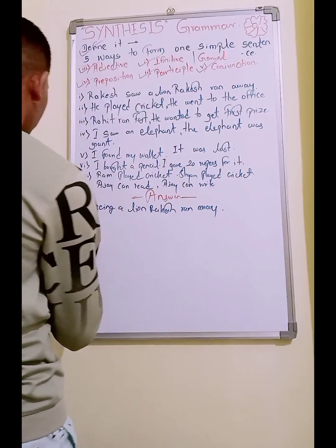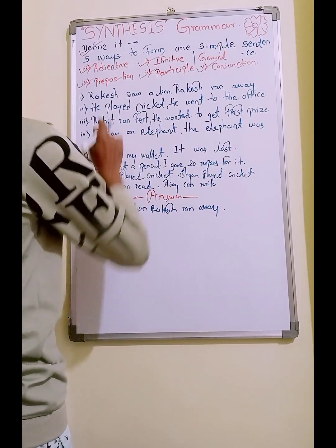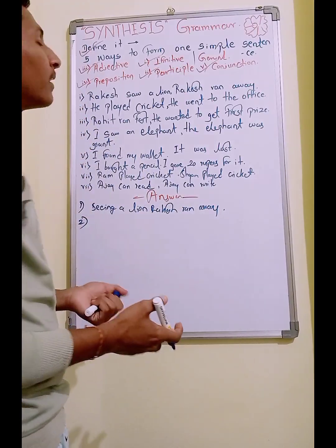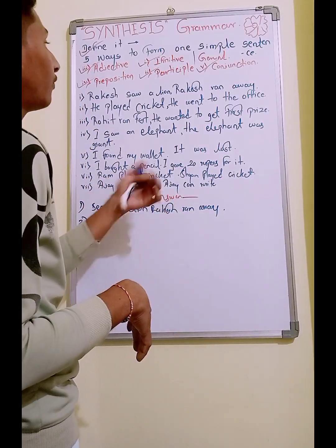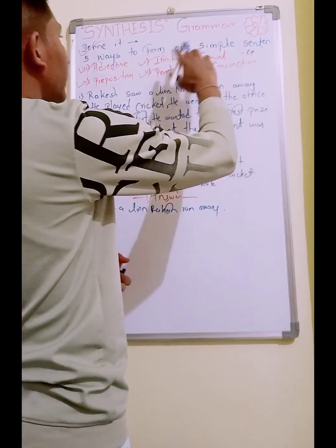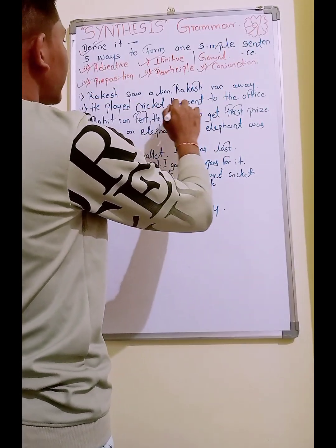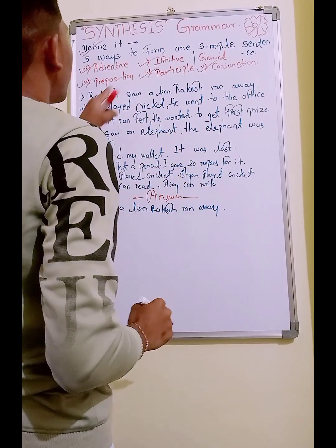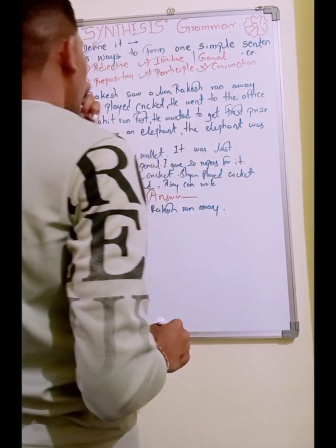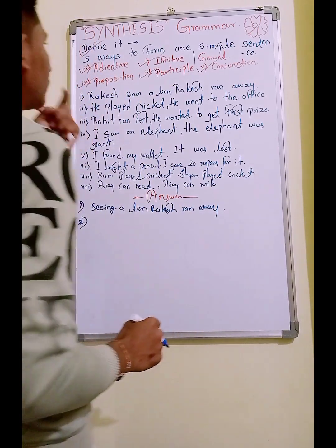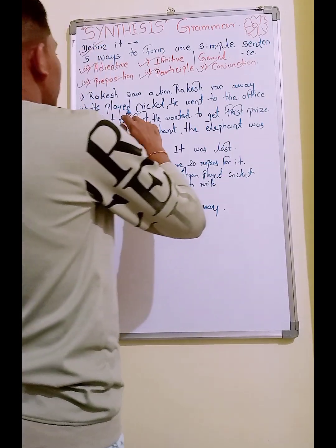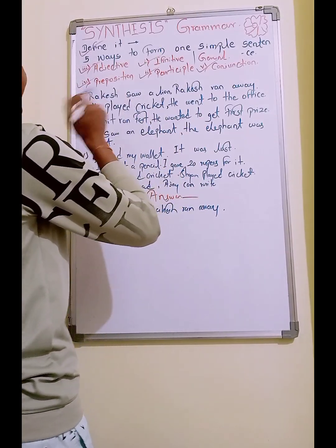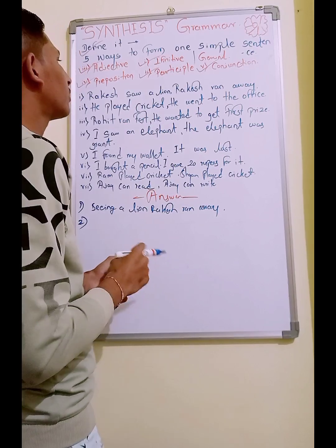The second question is: 'He played cricket. He went to the office.' Now which way will be suitable to convert this into a simple sentence? Infinitive will not be okay here — actually, infinitive could work — but preposition or conjunction will also be suitable.